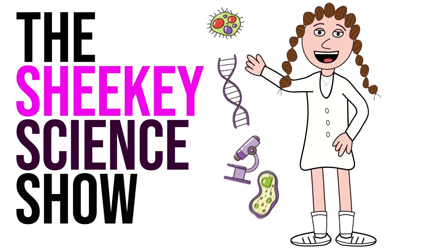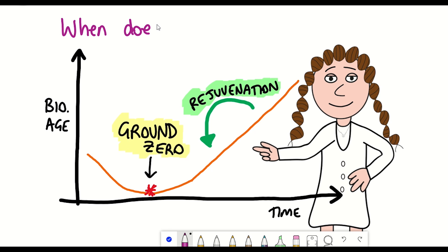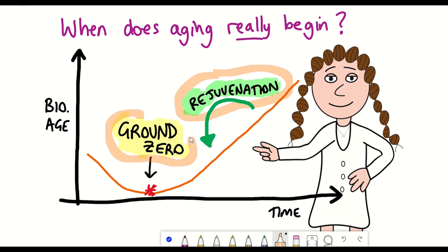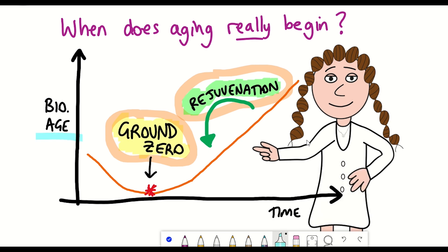Hello and welcome to the Shiki Science Show, where in this video we're going to look at the question: when does ageing really begin? The short answer is we don't really know, but the long answer goes into detail about two examples of rejuvenation and introduces the concept of ground zero — the lowest biological age at which both organismal life and ageing begin — and then talks about lowering ground zero.